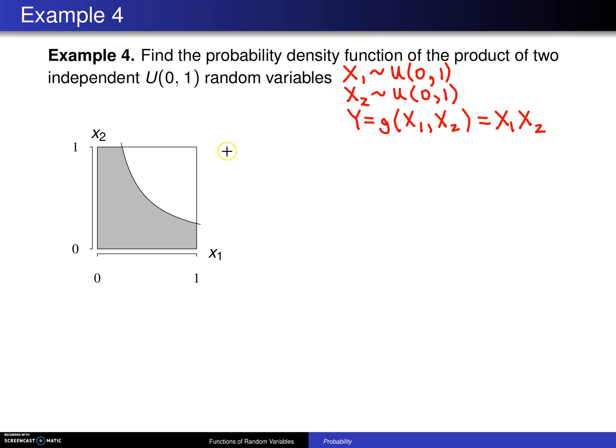So again, steps will be numbered. Here is step number one, which is find the support of x, which is denoted by script A. And in this case, script A will be the set of all (x1, x2) values that fall in, if you look at the distributions of the two of them, that fall in the unit square. So x1 lies between 0 and 1, and x2 also lies between 0 and 1. That ends step one.